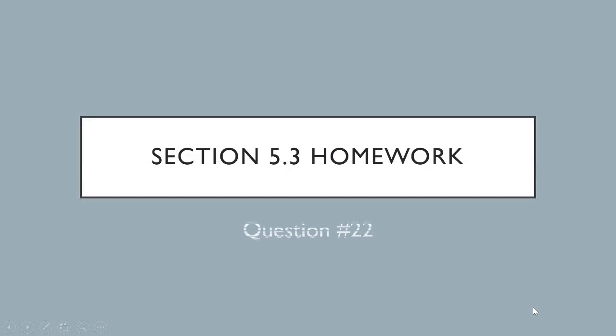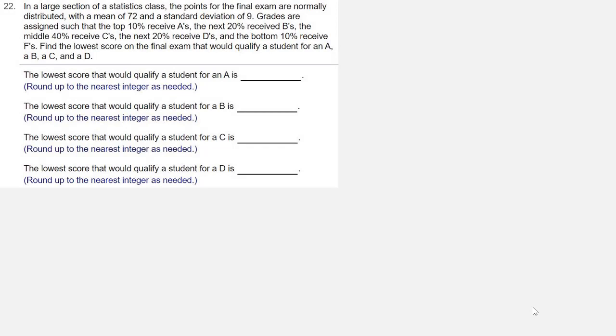We're looking at homework from section 5.3. This is question number 22. In a large section of a statistics class, the points for the final exam are normally distributed with a mean of 72 and a standard deviation of 9.